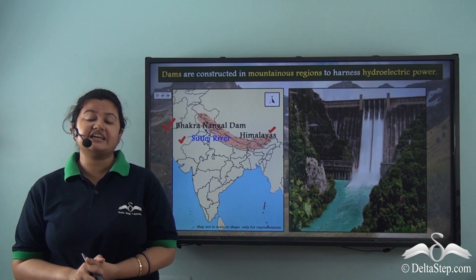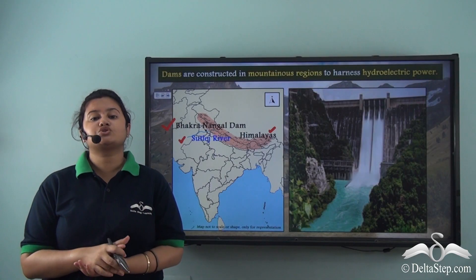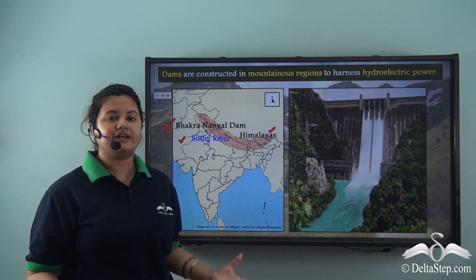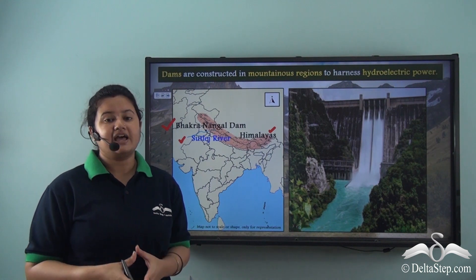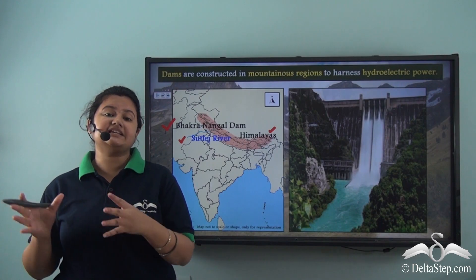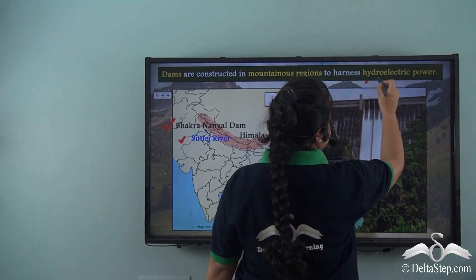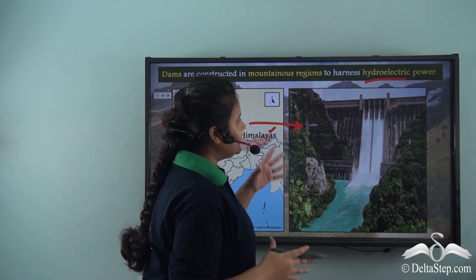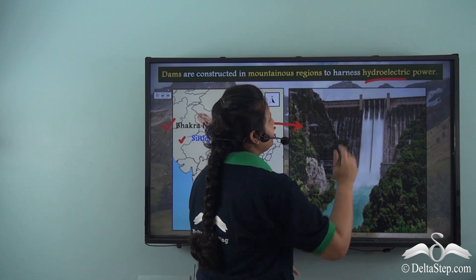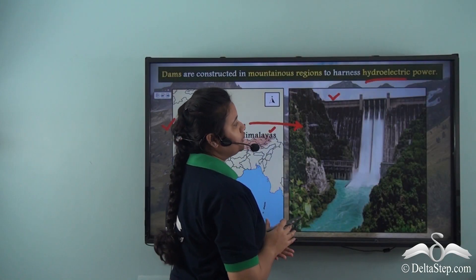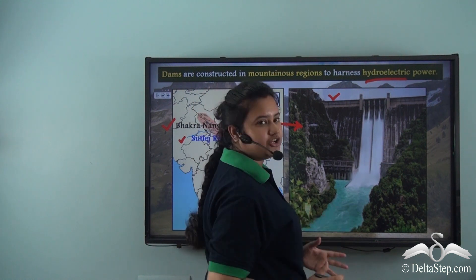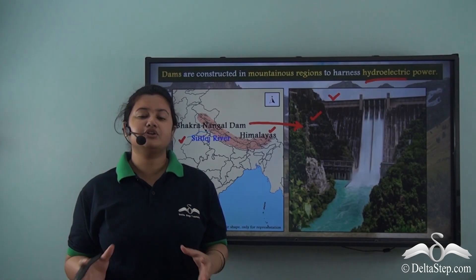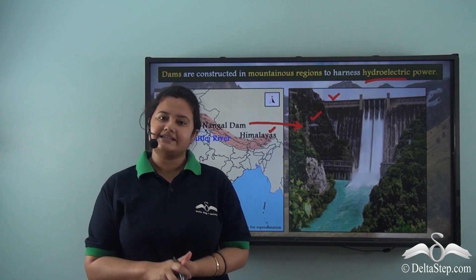Dams are located in hilly regions because the rivers flow swiftly there, and when they flow down the slope of a mountain range, they give rise to many natural waterfalls. Dams are constructed in these places to harness hydroelectricity. In the image of the Bhakra Nangal dam, we can see that water is allowed to flow down the dam to generate hydroelectric power. Transformers here enable the supply of hydroelectricity to adjoining cities.